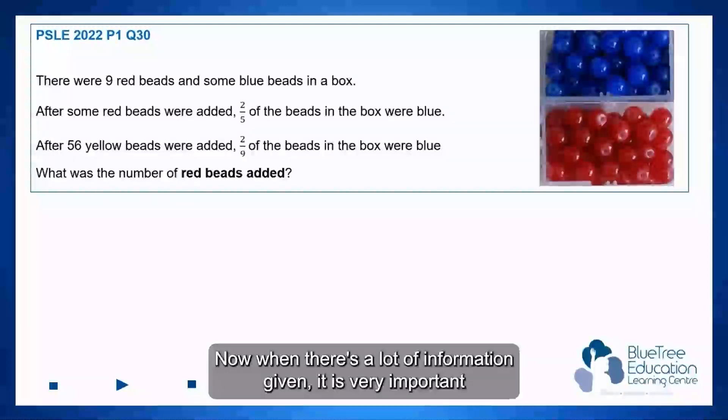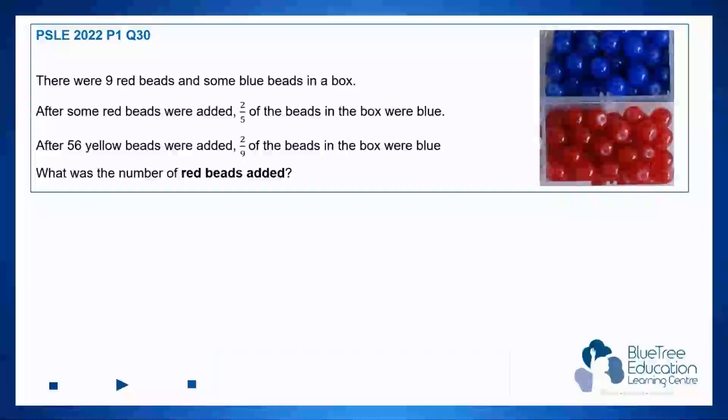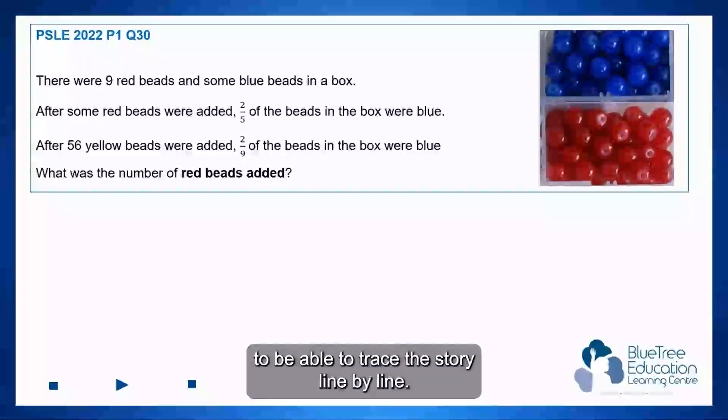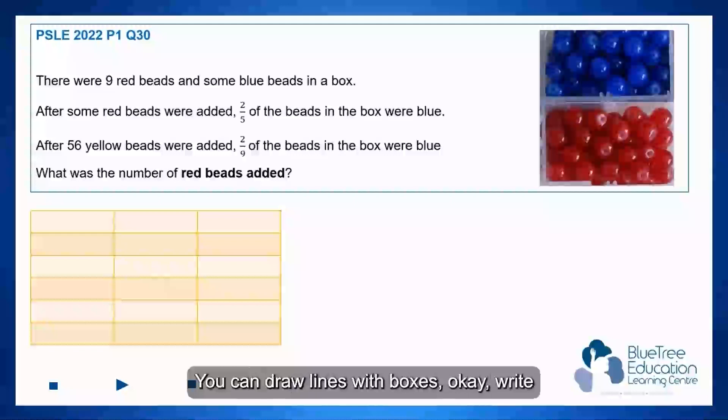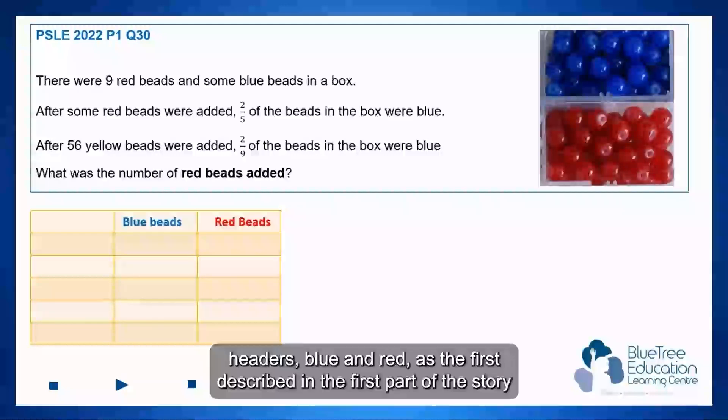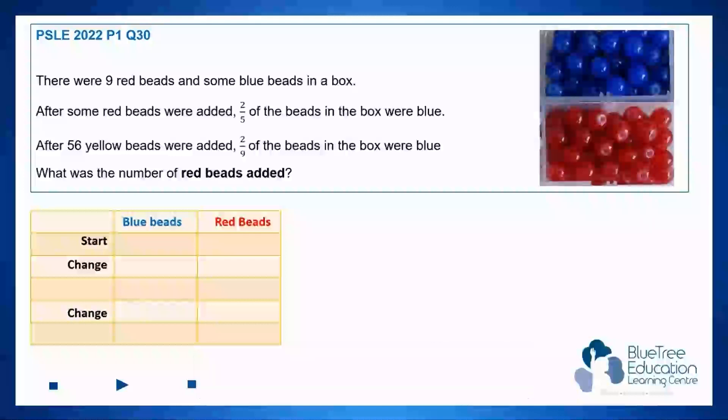Now when there's a lot of information given, it is very important that we use the process of reading and writing information to be able to trace the story line by line. So let me show you how this is done using a table. You can draw lines with boxes. Write headers for blue and red as they're first described in the first part of the story, and we can write start, change, end.